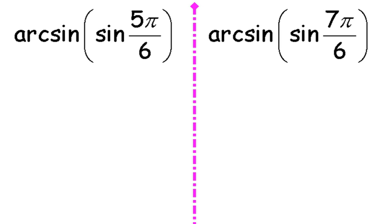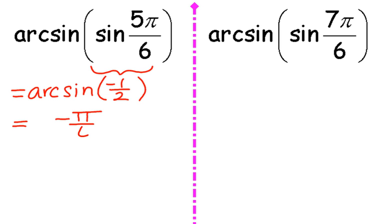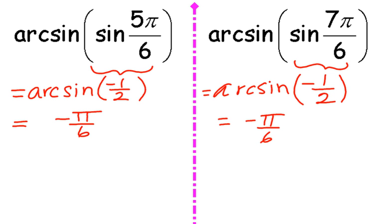For example, sine of 5π/6. 5π/6 is in the second quadrant. Sine value of the 30 degree angle in the second quadrant is 1/2. So I'm essentially being asked for the arcsin of 1/2, and that is π/6, which is not the same as 5π/6. If I try that for 7π/6, now I've moved into the third quadrant. The sine of 7π/6 is negative 1/2. But we've already seen that the arcsin of negative 1/2 is negative π/6. So again, these do not always cancel out. That is a misconception. Please do not try that. It will not always work.